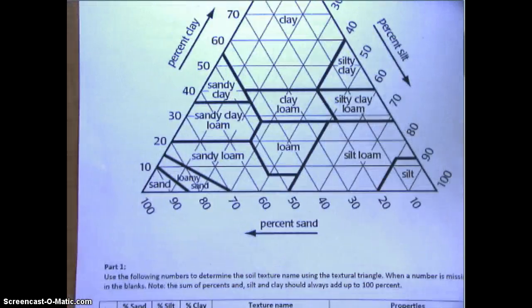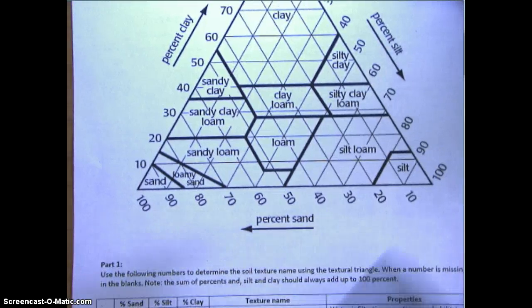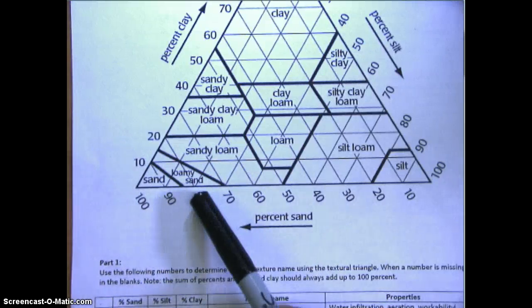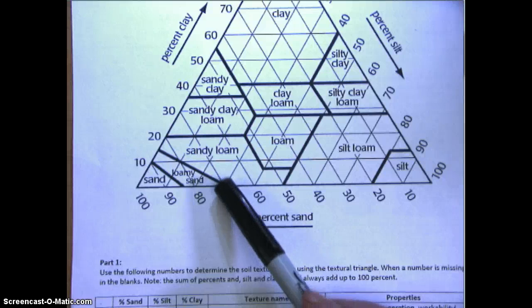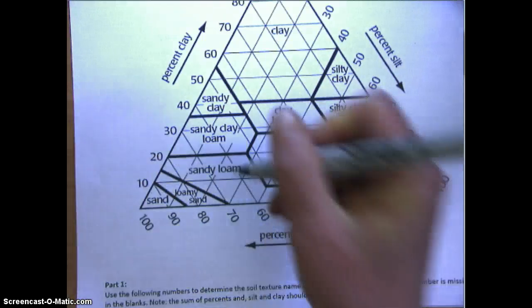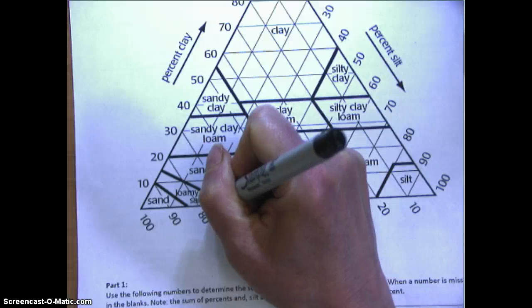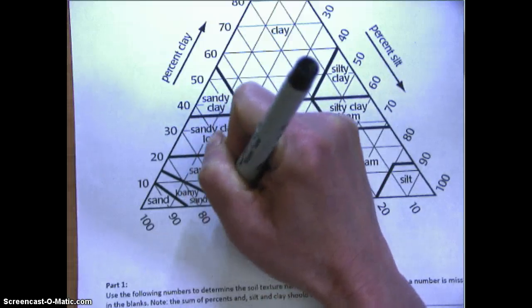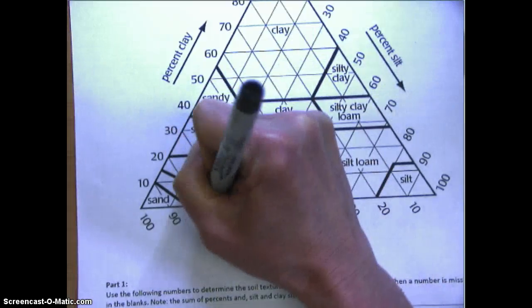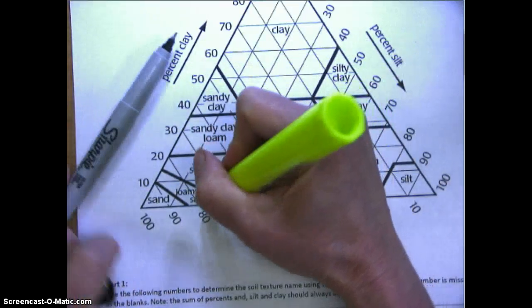You could figure this out by going to the percent sand. Here's 100%, here's 70, here's 80. There are two lines - one that goes on the left and one that goes on the right. You're going to figure out 75, going between 70 and 80, going towards the left. In between 70 and 80 is about right here.